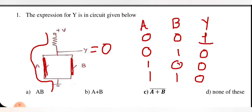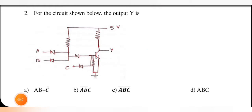Now what is this truth table? This is the truth table of a NOR gate. And what is the expression of the NOR gate? It is A plus B bar — meaning the complement of (A OR B). So which option is correct? Option C is correct for this.